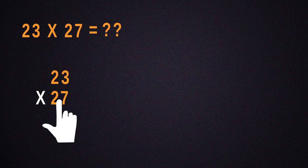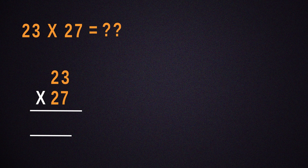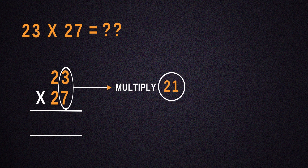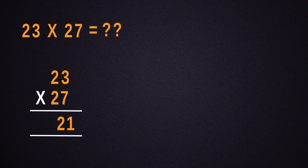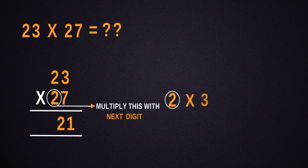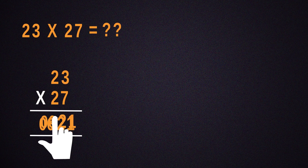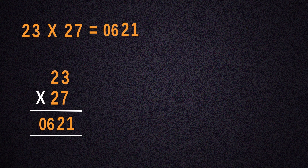Now, multiply 23 by 27. For that, the number obtained by multiplying 3 by 7 will be 21 and that should be put down. Then, multiply 2 with its next number, which is 3. Place the result next to 21 and we get 621 as the answer.